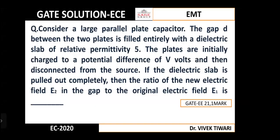Today we will see a GATE solution of electromagnetic theory. Today's question is: consider a large parallel plate capacitor. The gap d between the two plates is filled entirely with a dielectric slab of relative permittivity 5. The plates are initially charged to a potential difference of V volts and then disconnected from the source. If the dielectric slab is pulled out completely, then the ratio of the new electric field E2 in the gap to the original electric field E1 is.